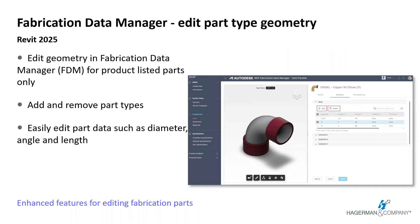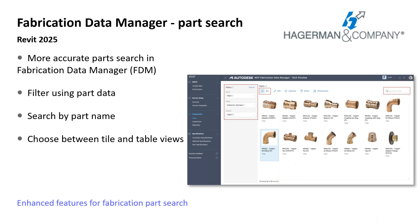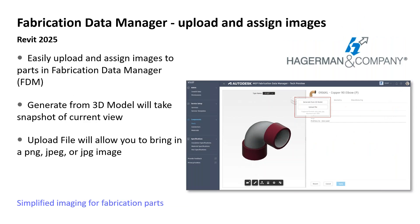Revit now allows users to set a maximum number of circuits through a new parameter from data and other panels. A warning will show when attempting to connect more circuits than the maximum. Power from low-voltage panels such as fire alarms can now be accounted for on the power circuit and the equipment feeding it. Users can now add and remove types and edit data information in the parts editor. Part search in the new Fabrication Data Manager allows users to get more accurate results with fewer clicks, and you can upload and assign images for parts in the Fabrication Data Manager.